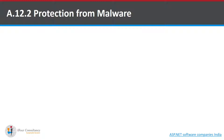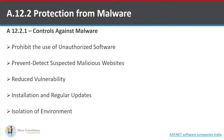Now let's look at Protection from Malware. The one control under this category is Controls Against Malware. It states that detection, prevention, and recovery controls to protect against malware shall be implemented, combined with appropriate user awareness. This includes prohibiting the use of unauthorized software, preventing or detecting suspected malicious websites, and reducing vulnerabilities in the system. Regular updates must be provided so that the right awareness is spread, and environments detected with a virus must be isolated.